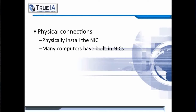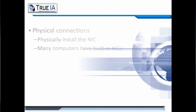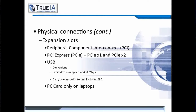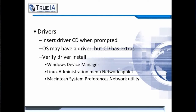The act of physically installing the NIC is pretty straightforward. However, many computers already have a NIC built in. They're plugged into what's called expansion slots — called PCIs, or peripheral component interconnects. After successful physical installation of the NIC, you'll need to install the proper drivers. Insert the driver CD when prompted, or the operating system itself may already have the appropriate driver. It's important to verify that the driver was properly installed. For Windows operating systems, you'll use the Device Manager. If you're on a Linux machine, look in the network app. Or if you're dealing with a Mac, go to Preferences and then the Network Utility.